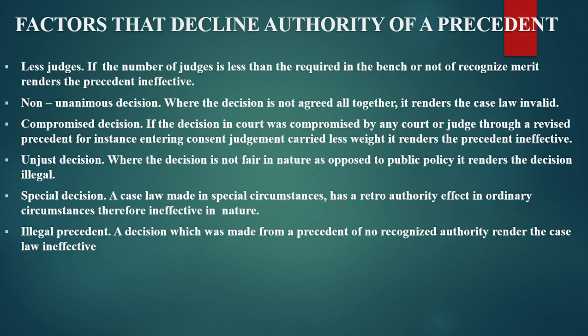Factors that can decline the authority of a precedent. One of them is the number of judges: if the number of judges is fewer than required in the bench, or not of recognized merit, it can render the precedent ineffective. The number of judges acts as a core factor in determining if the precedent is binding. If the number of judges when developing a certain precedent does not satisfy the quorum, the precedent is rendered narrow and void. In a unanimous decision where the decision is not agreed upon altogether, it is also rendered narrow and void.